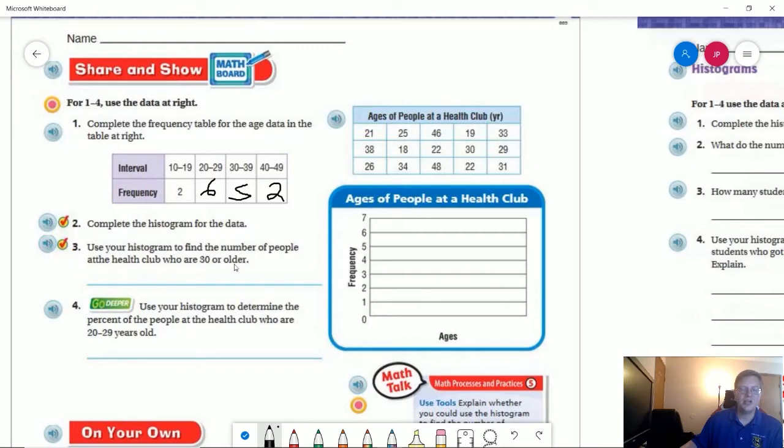For our question number three we want to figure out how many people at the health club are 30 and older. We can do that by adding these two numbers together. I'm going to go ahead and pause the video and let you pause as well and I will see you in just a moment.